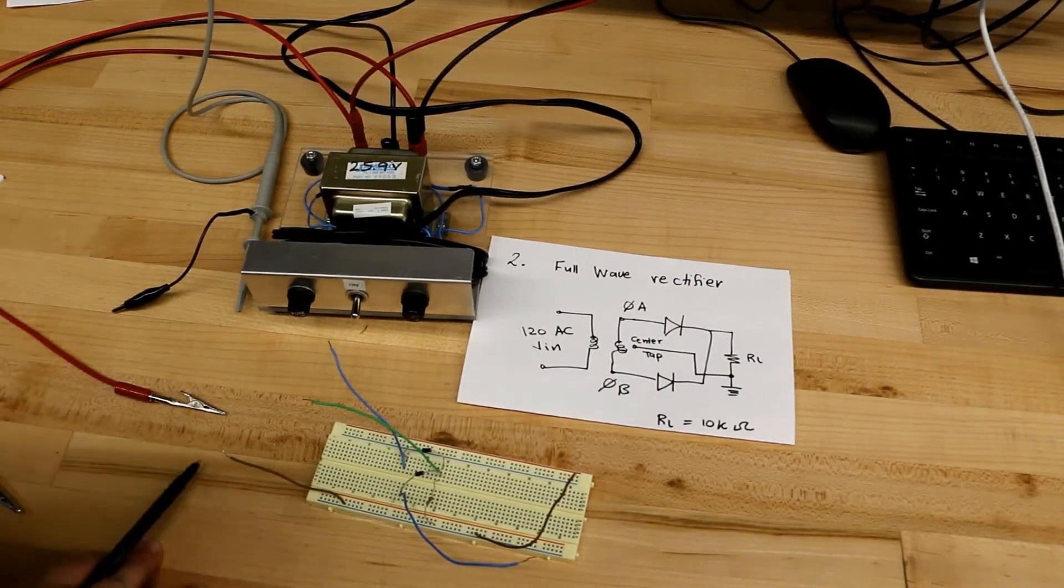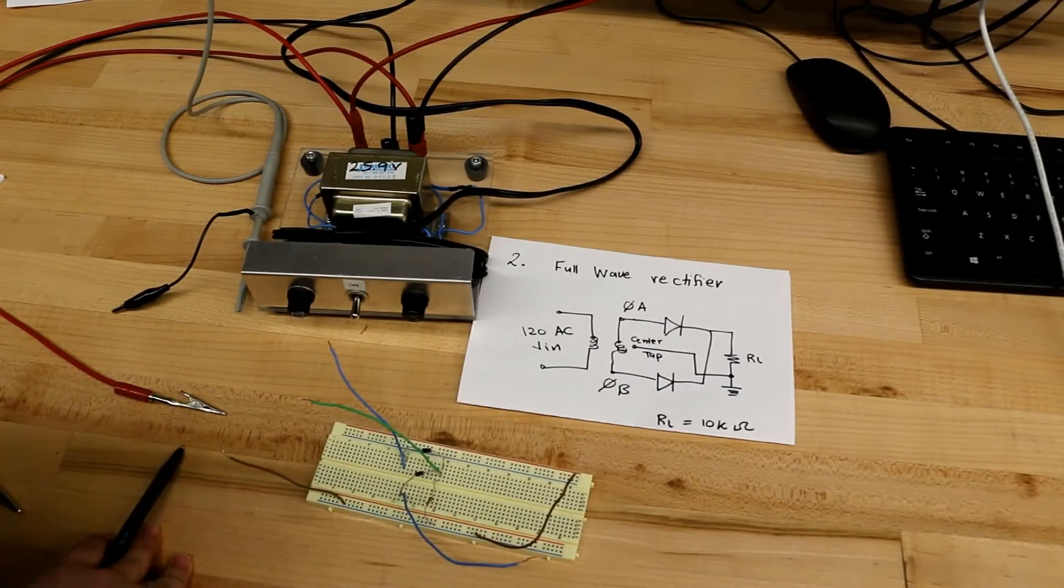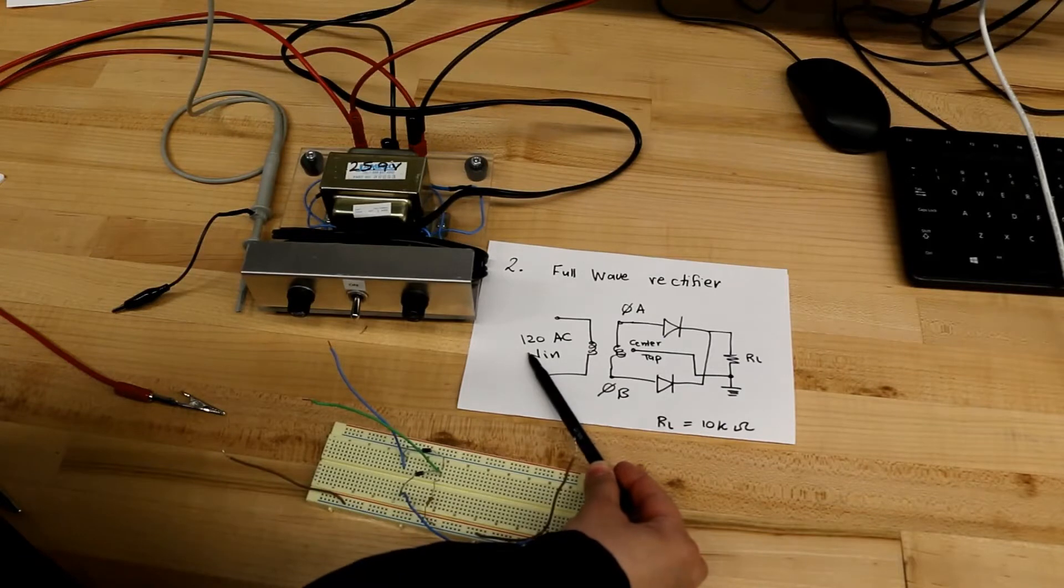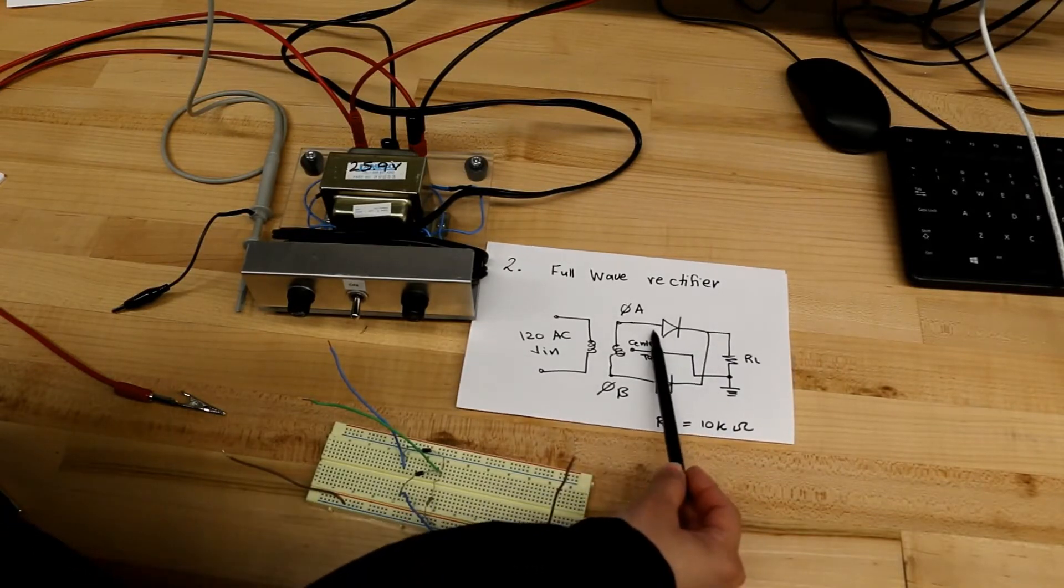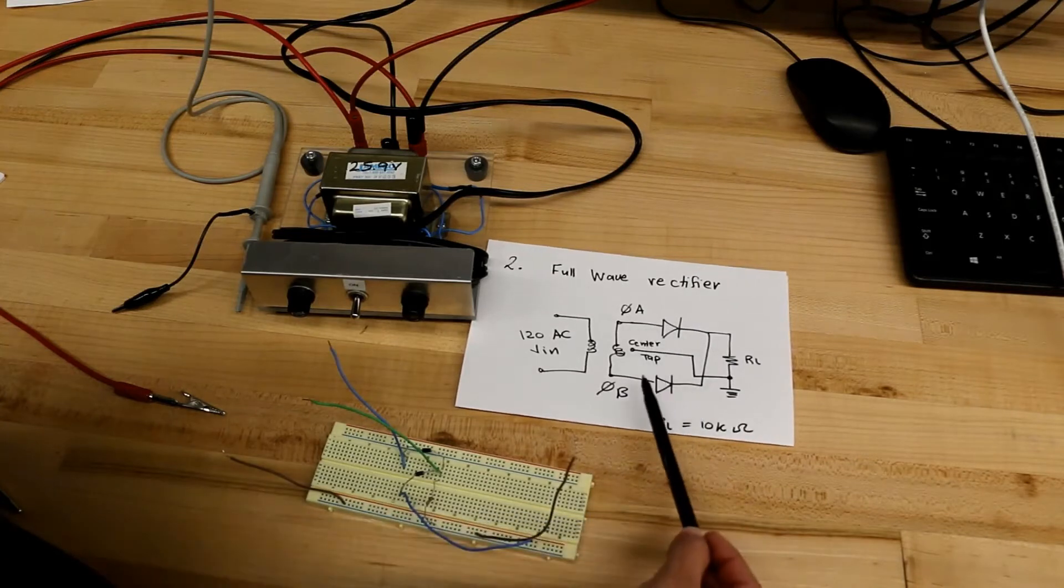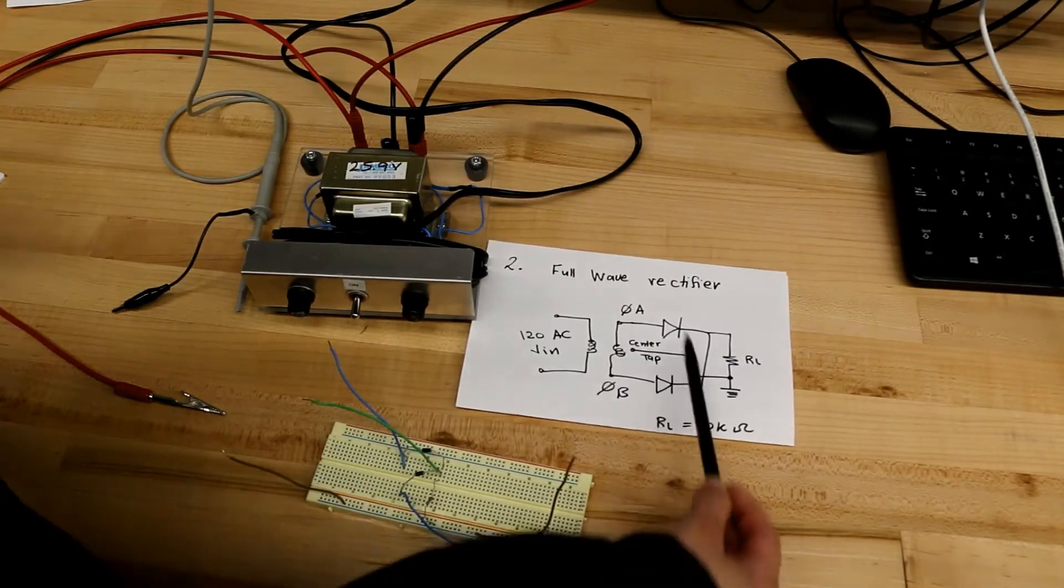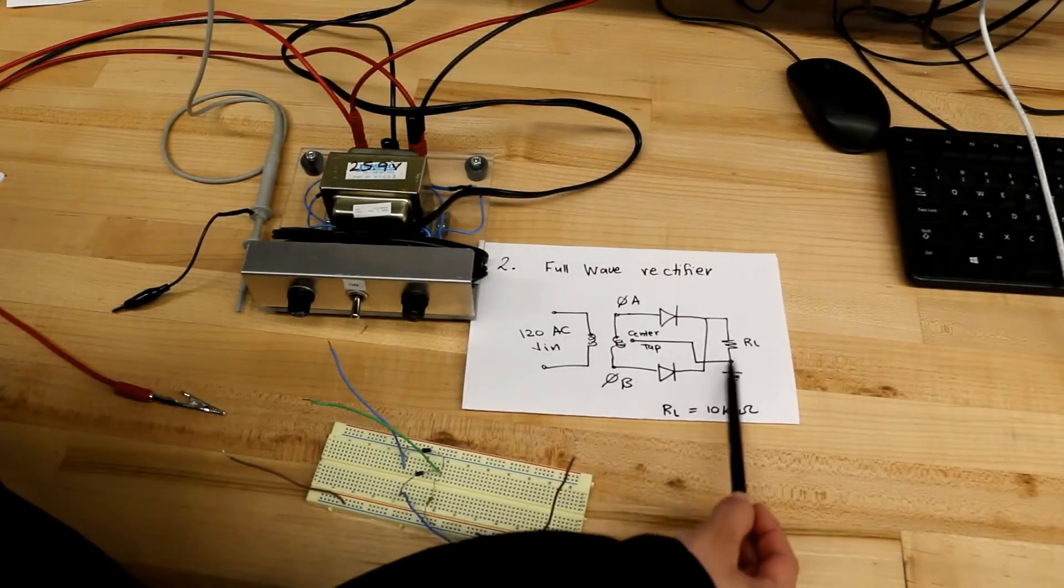So this is the second problem, which is the transformer with a full wave rectifier. Here's the circuit. The input, the AC input 120 volts, from phase A is connected to one diode and the second diode from the second phase. The two cathodes are connected together and then to the resistor to the ground.